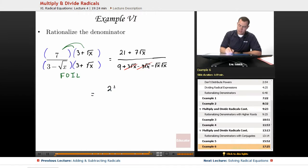This will finally leave us with 21 plus 7 square root of x all over 9 minus x. Now that we've gotten rid of all those radicals in the bottom, we can say that our denominator is rationalized.